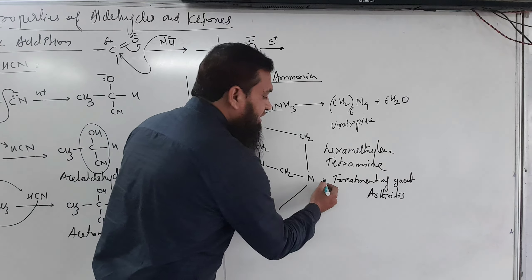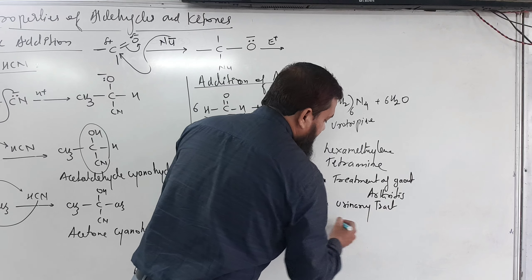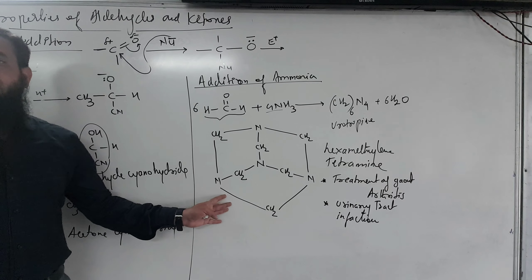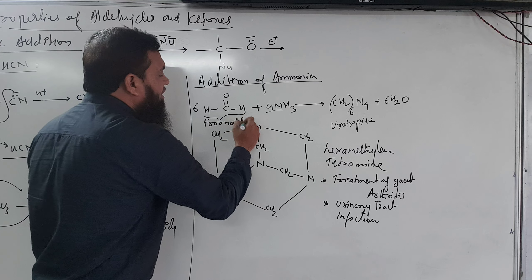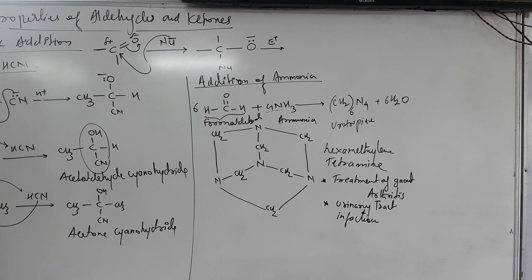Urotropin is very useful in the treatment of gout arthritis — joint pain, especially in the knees. It is also used for urinary tract infections. So urotropin is the addition product of six moles of formaldehyde and four moles of ammonia.